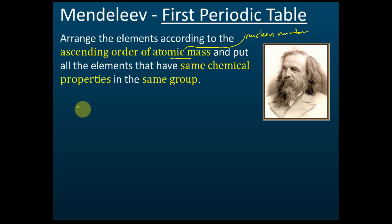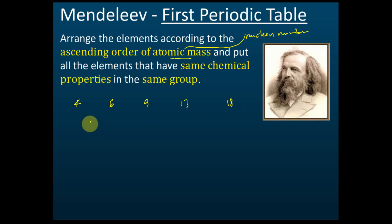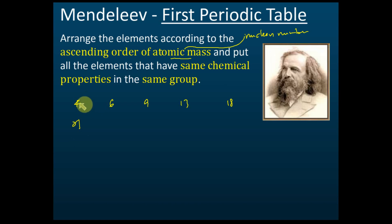For example, if the nuclear numbers are 4, 6, 9, 13, 18, 21 and so on — if element 21 has the same chemical properties as element 4, then he puts them in the same group. Elements with the same chemical properties are placed under the same group, arranged in ascending order of nuclear number: 4, 6, 9, 13, 18, 21, and so on.